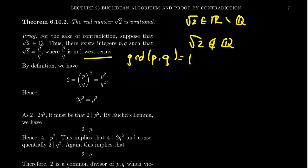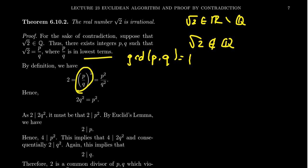By definition, the square root of two is a real number such that when you square it, you get two. So taking the equation √2 = p/q and squaring both sides, the left-hand side becomes two, and on the right-hand side, squaring p/q gives p²/q². Clearing the denominators, we get the equation 2q² = p².